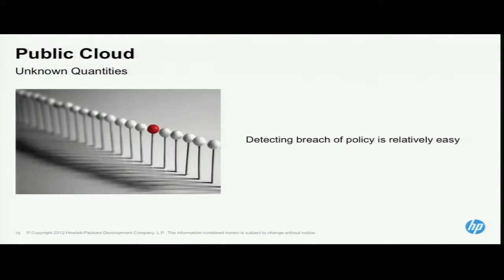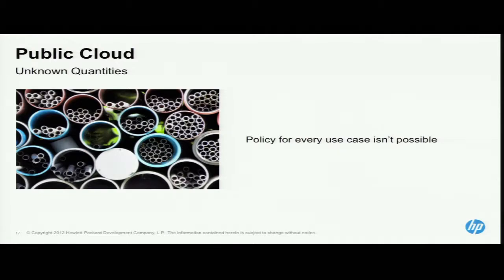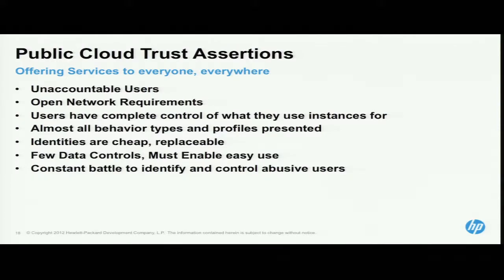In the private cloud, you have clearly defined policies and can spot very easily when something steps outside of that norm. When you have only a vague idea of what's going down your pipes, working out which traffic is right and which is wrong is tricky. In the public cloud, our users are largely unaccountable — you can't fire a user. You have open network requirements; we cannot arbitrarily decide what data users can put across our network. Identities are cheap, with few data controls we can realistically apply at the edge.